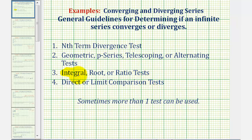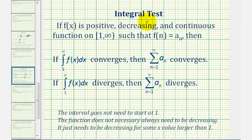For the integral test, if f of x is a positive decreasing and continuous function on the interval from one to infinity, closed on one, such that f of n is equal to a sub n, then if the integral converges, then the series converges. And if the integral diverges, then the series diverges.